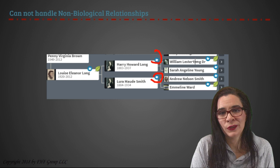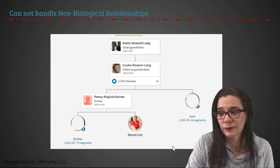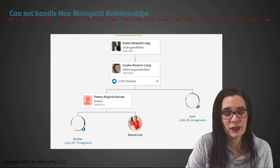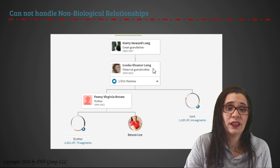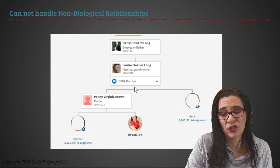When I click on Harry Howard Long, I can view his ThruLines. Truth be told, I am genetically related to my brother and genetically related to this match. But once I leave these folks, as I've said in earlier videos, we have left DNA and now we're climbing a genealogical tree. People don't always know that there is no genetic evidence of these relationships — they're just paper trails, or in this case, that this is an adopted set of parents.